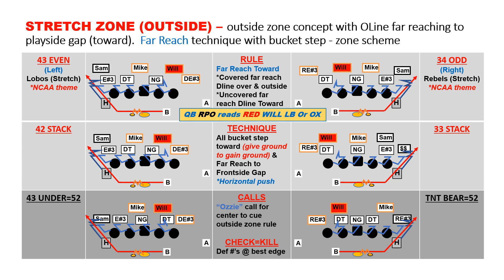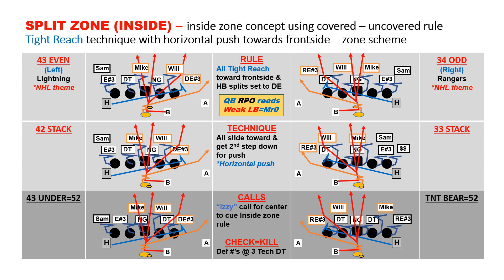The quarterback RPO reads the Willbacker or the OX, whichever one we have best access with. A simple call we like to use, if that's part of your system, is an Aussie left or right. Our complement to stretch zone is our split zone or inside zone. We still use our covered-uncovered rule, but now with a tight reach technique. The theme is NHL with Lightning to the left and Rangers to the right.